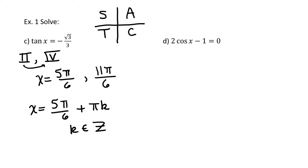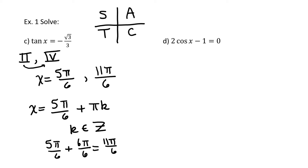Just to check: starting at 5π/6, if you add π, that gives you 11π/6 — the other value in the same period. So we didn't have to write it as two separate equations.